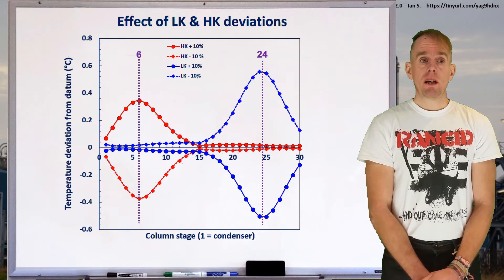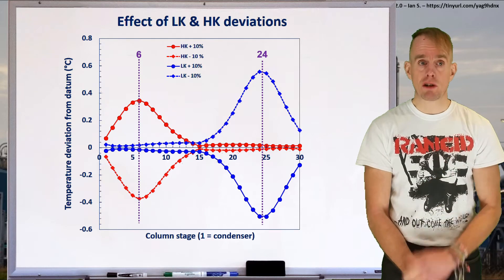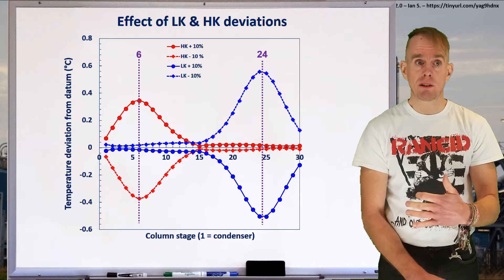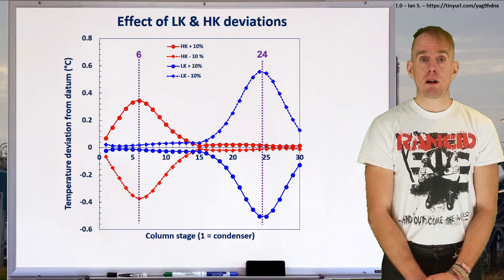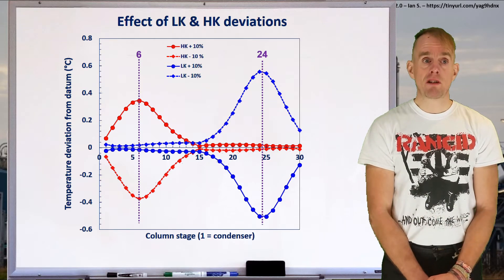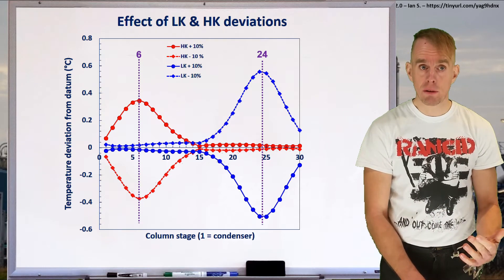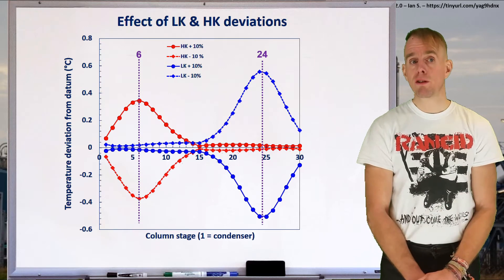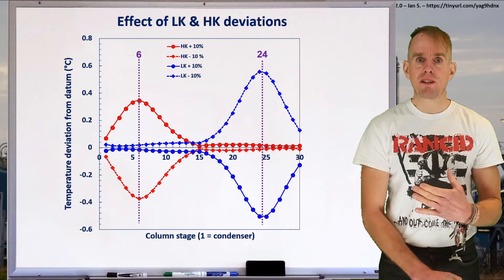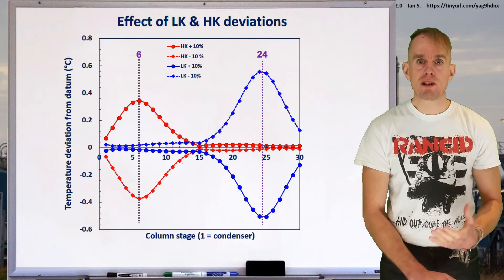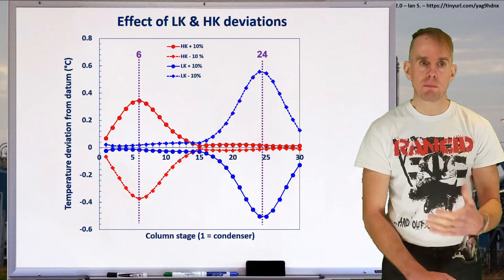We also see that at various points in both the rectifying section and the stripping section there's a bigger temperature deviation compared to anywhere else. Looking at these data, it might be appropriate to say, let's start to think about measuring temperature deviations at tray 6 for the top of the column and at tray 24 for the bottom of the column, because this is where our largest temperature swings are — which means it's going to be easier to measure those temperature changes and get a fast result with which we can control composition specifications.